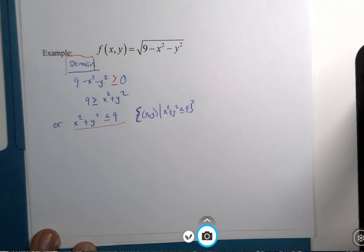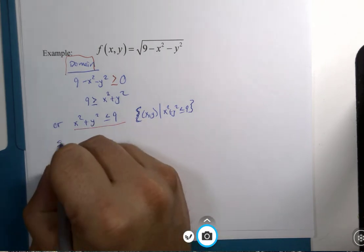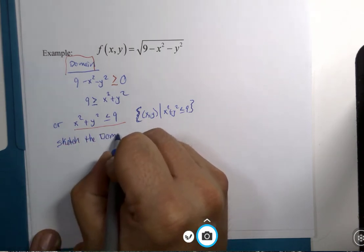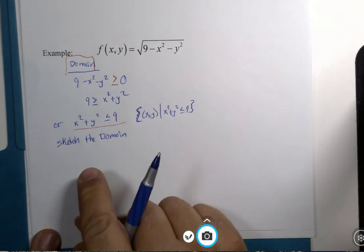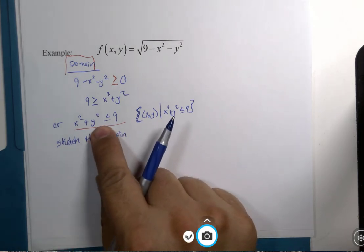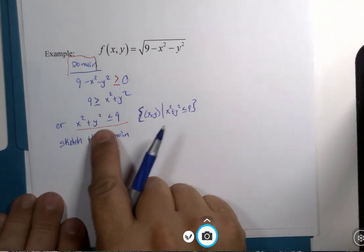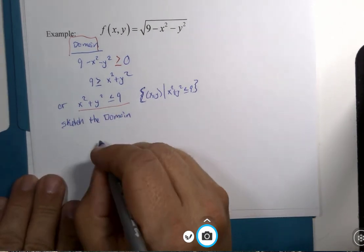But then you'll find out in my classroom I don't ask that question. I ask people to sketch the domain. I want a picture of the x and y values. What kind of x and y values are we talking about here? Well, if it was equal to 9, I would say it's a circle.